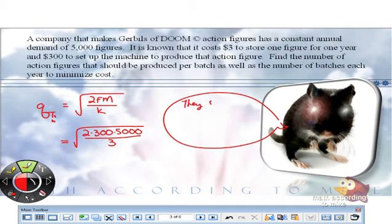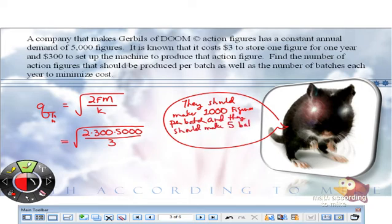So they should make 1,000 figures per batch. Because the Q is the number in the batch. And then it says how many batches they need to make. Well, how many total figures do we need? And we have 1,000 per batch. So how many batches do we need? Five. And they should make five batches. Oh, batches. There it is.